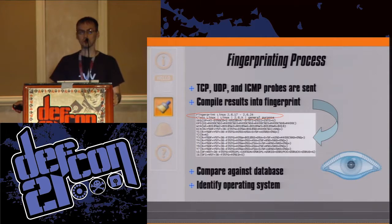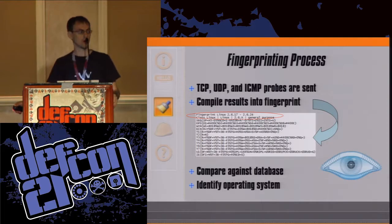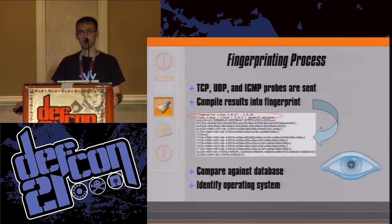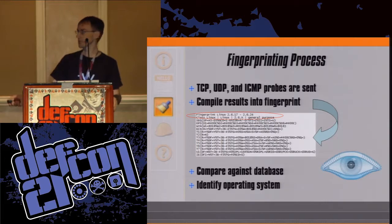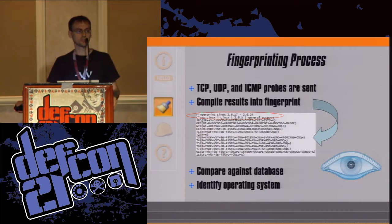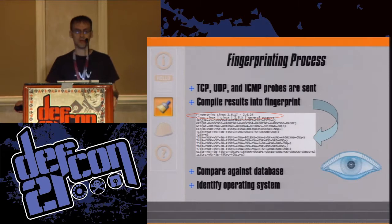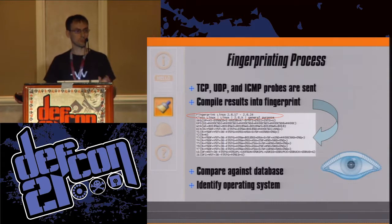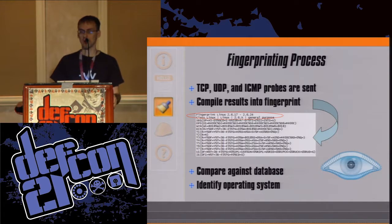NMAP sends out TCP, UDP, and ICMP probes. Those probes have responses, and NMAP compiles the results into a fingerprint composed of response attributes and response categories. It records the structure and then compares that fingerprint against a database of previously enumerated operating systems. It identifies the target by finding a matching entry. How closely it matches determines the percentage — 89%, 90%, 100%. It doesn't happen very often, but it does.